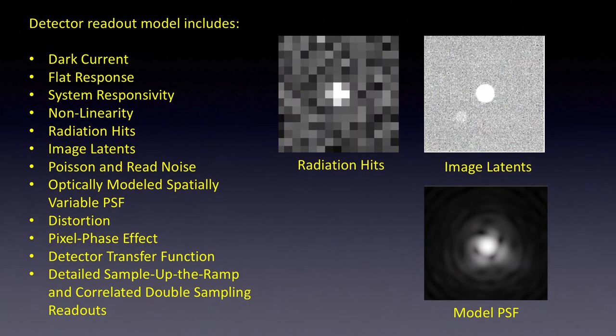The Simulator includes a really detailed model of the detectors and how they are read out. This includes the dark current and flat field responses taken from actual H2RG arrays. Read noise and Poisson noise receive careful treatment. We also include non-linearity, image latency, and radiation hits. We use a set of optically modeled PSFs which can vary across the arrays with spatial distortion, and we can place those objects with sub-pixel accuracy, correctly treating the large pixel size.